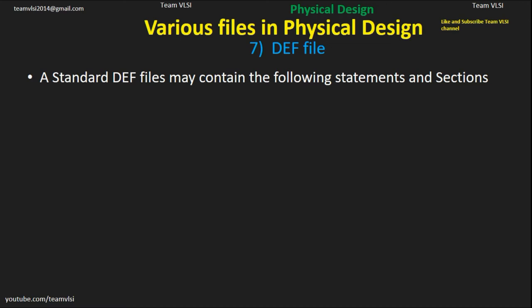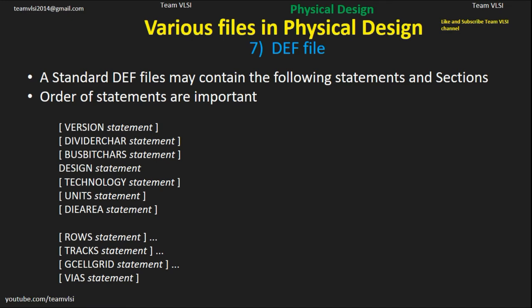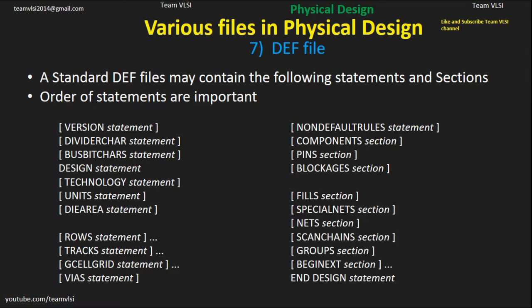Physical data includes placement location and orientation of components and routing geometries. Standard DEF files may contain the following sections, and the order of statements in a DEF file is very important. The sections are: version, divide character definition, design name, technology name, die area, row statement, track statement, global cell grids, via statement, non-default rules, components, pins, blockages, special nets, nets, scan chain, groups, begin extension, and end of design.